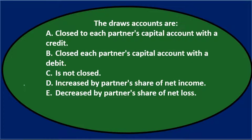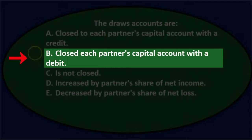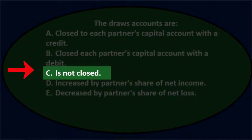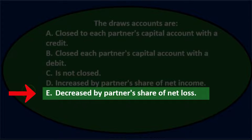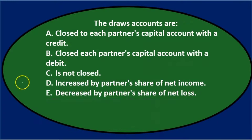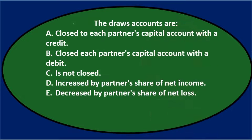Next question: the draws accounts are A) closed to each partner's capital account with a credit, B) closed to each partner's capital account with a debit, C) not closed, D) increased by partner's share of net income, or E) decreased by partner's share of net income. Let's go through this and use the process of elimination.